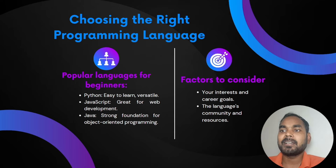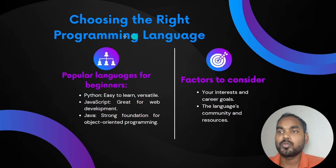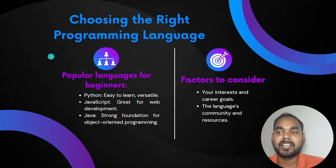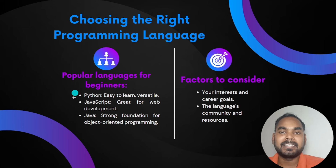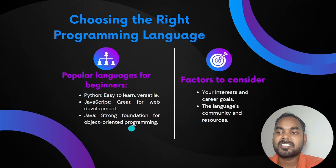Now we will talk about choosing the right programming language. You will have to select the right programming language. If you look at the most popular programming languages, they are Python, JavaScript, and Java. These three languages are very popular and the demand for them is very high.